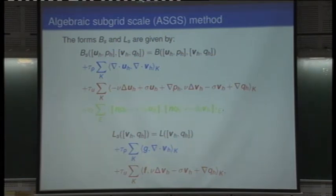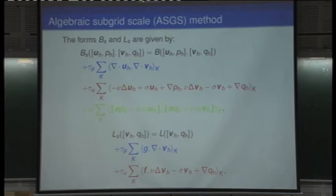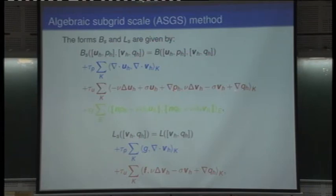Two comments. First, we have here the adjoint operator applied to the test function. The viscous and porosity terms are self-adjoint, therefore there is a sign change: minus times minus gives a plus, and a minus here. What provides pressure stability is the gradient of p times gradient of q — that is what provides pressure stability — and in this case we do not need anything else.